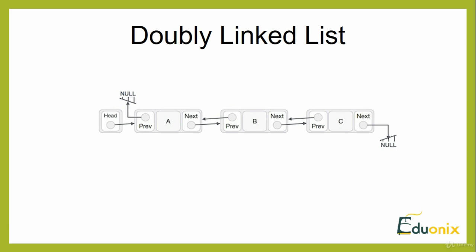Doubly linked list contains link elements called first and last. Each link carries a data field and a next link field. Each link's next pointer points to the next link, and the previous pointer points to the previous link. The last link carries a null reference marking the end of the list. For element A, the previous element points to null since it is the first element, meaning it supports both forward and backward traversal.